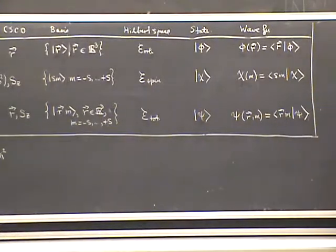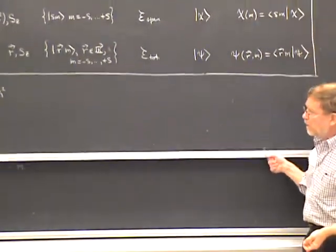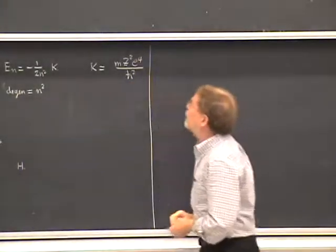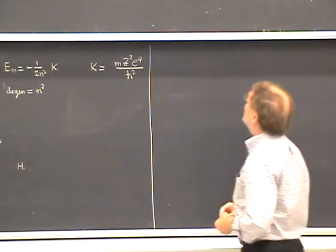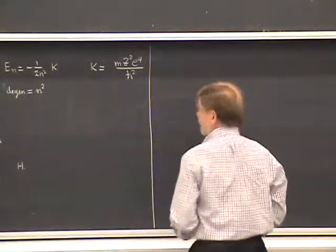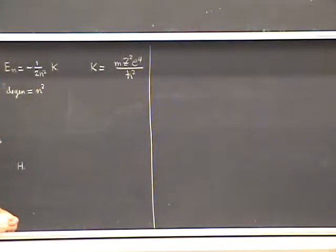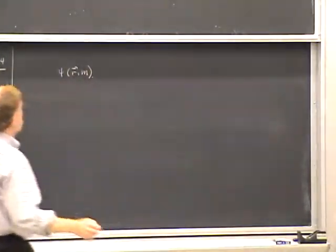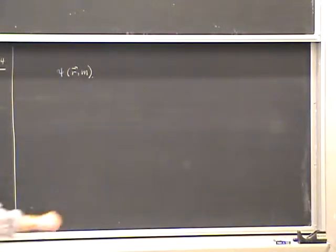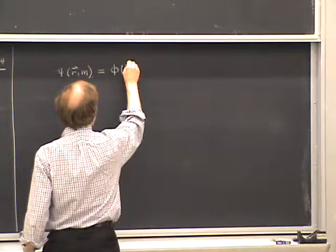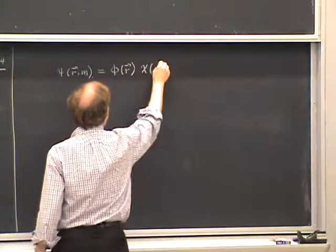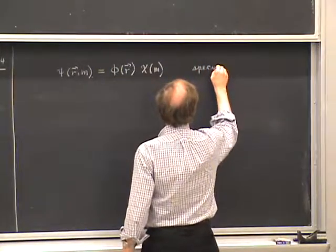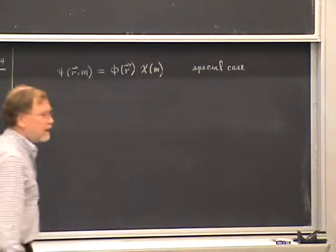The point of this table is to understand wave functions for spatial, spin, and combined spatial-plus-spin degrees of freedom. Now let's talk about wave functions for particles with spin—these are psi of r comma m. It may happen that a wave function like this can be factored into a product of an orbital wave function phi of r times a spin wave function chi of m. However, I want to emphasize that this is a special case; a general wave function for a particle with spin cannot be factorized in this manner.